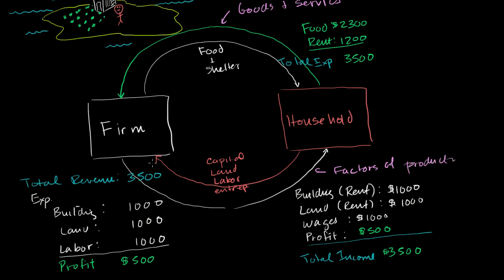And in exchange for the factors of production, in exchange for giving these things, the firms give the households income, essentially rents on the different factors of production that are being given to the firm for the most part. And over here, in exchange for the goods and services, the households are making expenditures that can also be considered revenue of the firm.